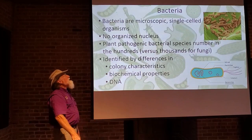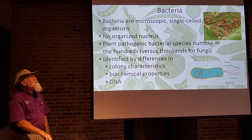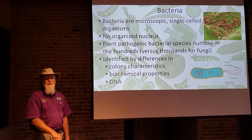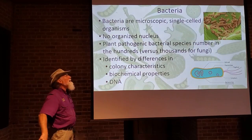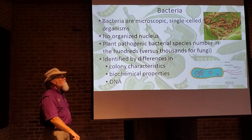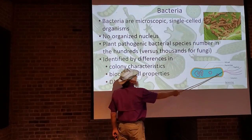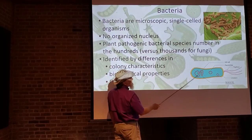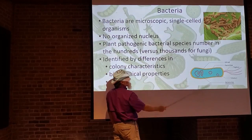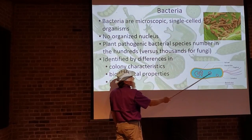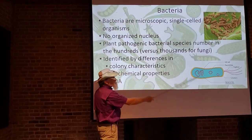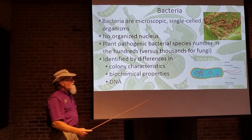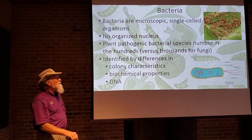Now, what about bacteria? Moving on from viruses — things are getting a little bigger. Bacteria are microscopic single-celled organisms that you can actually see with a light microscope, though still not with the naked eye. A typical bacterium has a cell wall, circular bacterial DNA, sometimes extra plasmid DNA, and cytoplasm inside. This is just a simplified diagram of what a bacterium looks like.